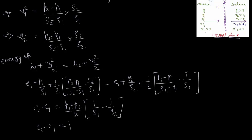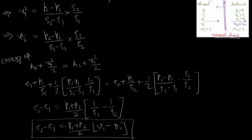Now, 1/rho1 is nu1, the specific volume at state 1, and 1/rho2 is nu2, the specific volume at state 2. This simplifies to: e2 minus e1 equals minus (p1 plus p2)/2 times (nu2 minus nu1), which is called the Rankine-Hugoniot equation. This equation contains only thermodynamic properties: e (internal energy), p (pressure), and nu (specific volume).